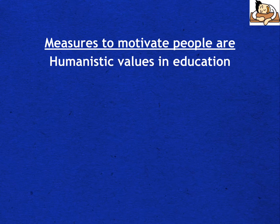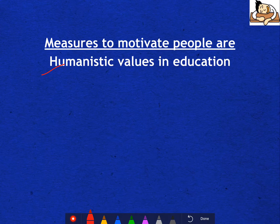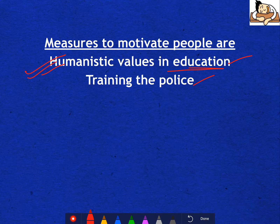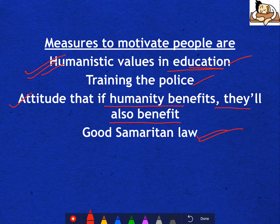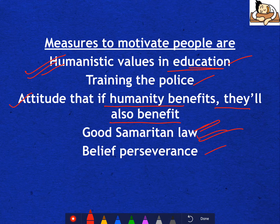What can actually be done to motivate people to help others? Humanistic values can be introduced in education, promoting these values from the ground up. Police should also be sensitized so that witnesses are not excessively hassled or harassed — training the police will set a precedent and people will come forward. The attitude that if humanity benefits, they'll also benefit needs to be inculcated in people. Good Samaritan law should be passed — if you act as a good Samaritan, you get appreciation or at least your harassment doesn't happen. Belief perseverance should also be there. These are the measures that, if followed, can actually motivate people.